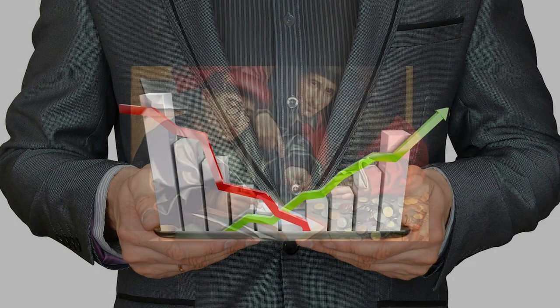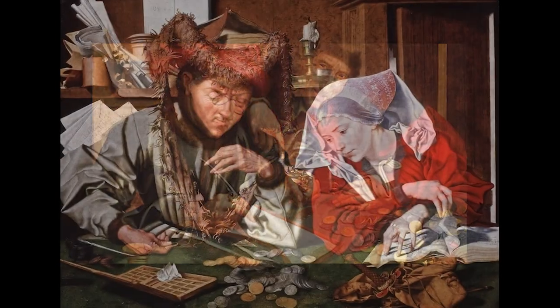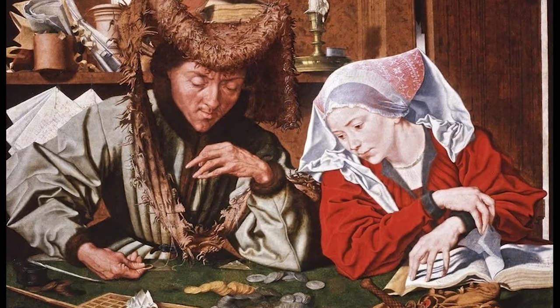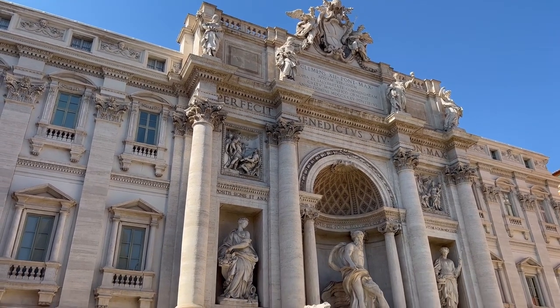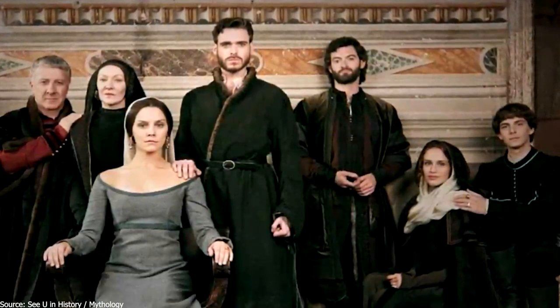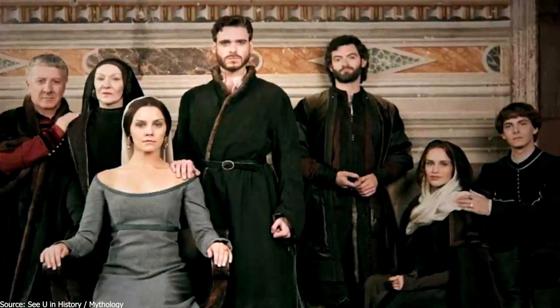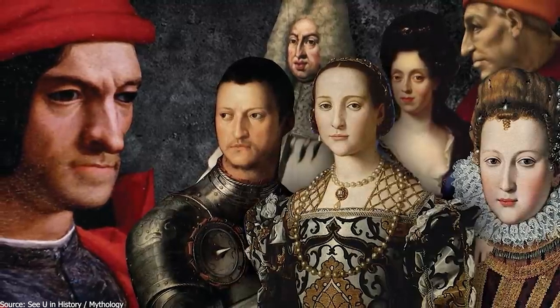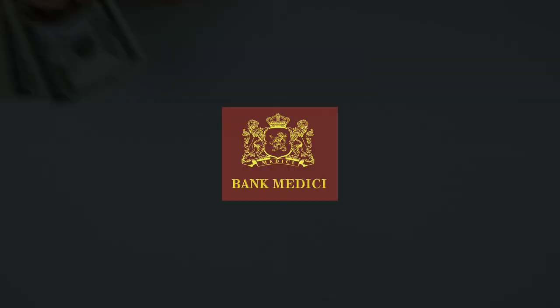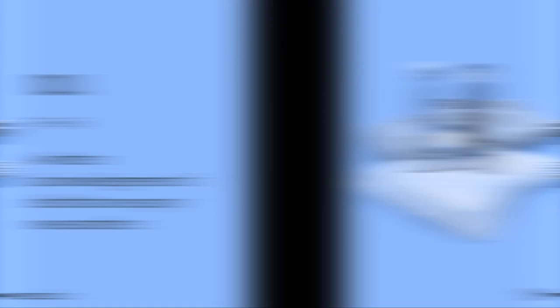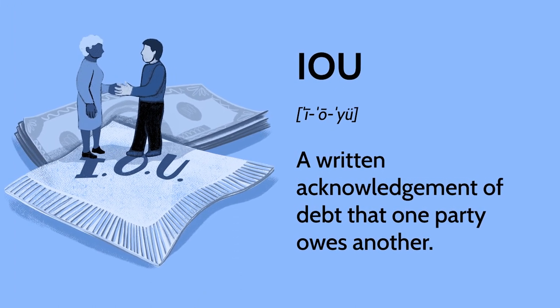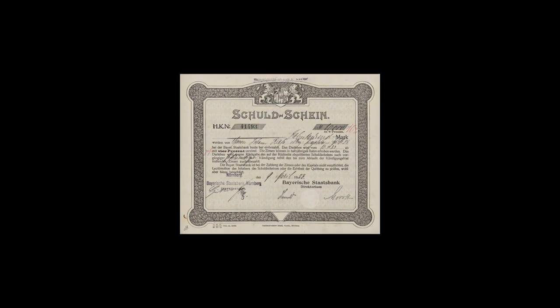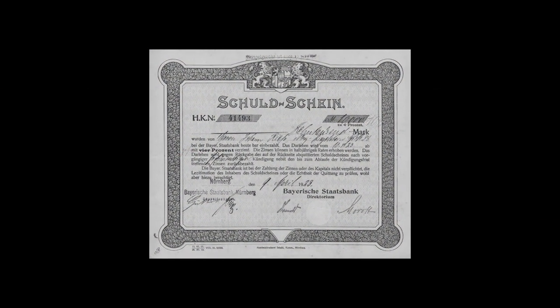These money changers gradually evolved into lenders, giving birth to the early concept of banking. By the time of the Renaissance, banking had taken a more structured form. The Medici Bank, established in 1397 by the powerful Medici family, became one of the first and most prosperous institutions. The Medici Bank and many other banks predominantly used bills of exchange — essentially IOUs, promises to pay that could be traded among merchants.